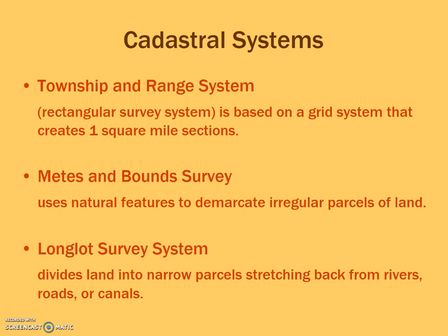Before we had the township and range system, we actually had the metes and bounds survey system. This uses natural features like rivers, trees, or perhaps even a mountain. The problem with it is that if something happens to that natural feature, you've lost your property line or your way of keeping track of your property boundaries. As a result of those problems, we developed the township and range system.